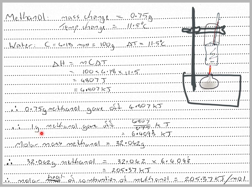Then 1 gram of methanol would give off 4.807 divided by 0.75. We're dividing both by 0.75 to work out the energy per gram, which equals 6.4093 kilojoules.